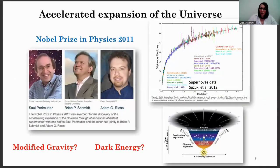But our universe is expanding with an acceleration, and in 1998, two teams under the leadership of Perlmutter and Riess, studying distance Type Ia supernovae, independently discovered this fact.